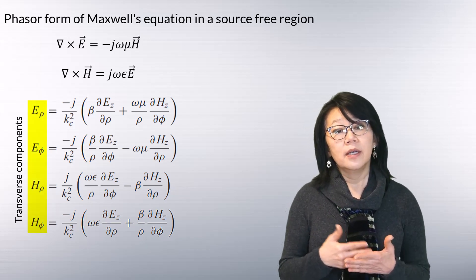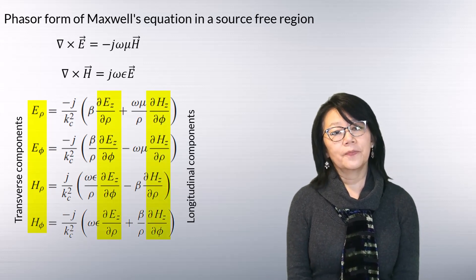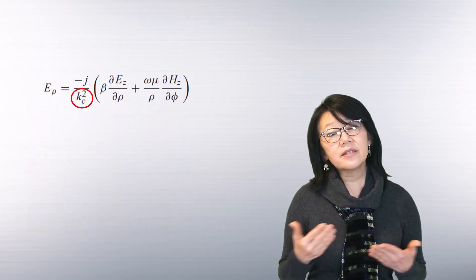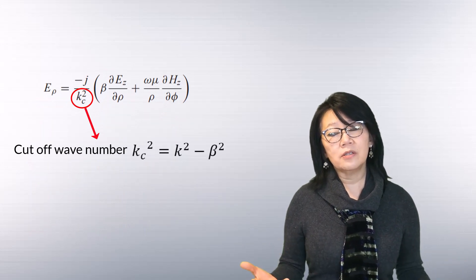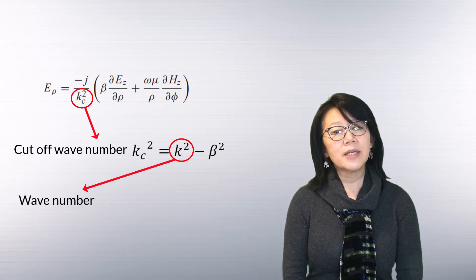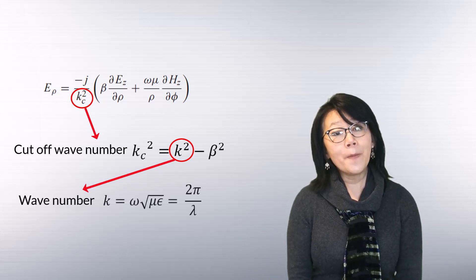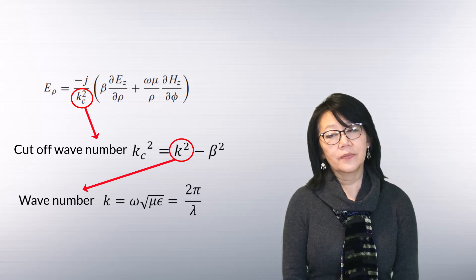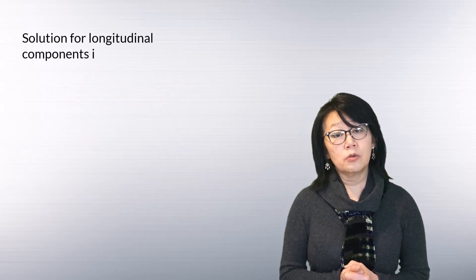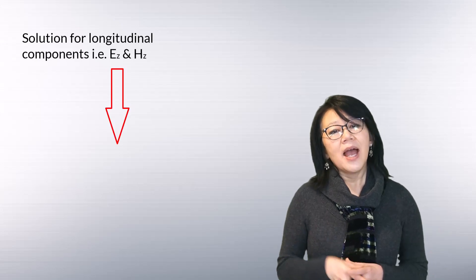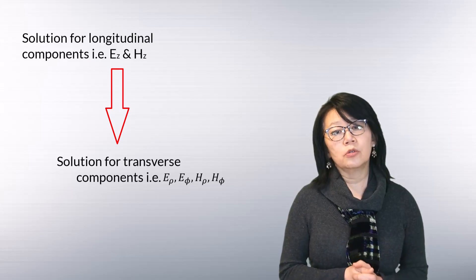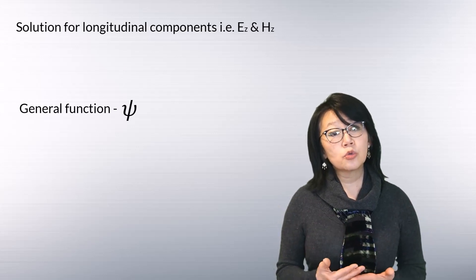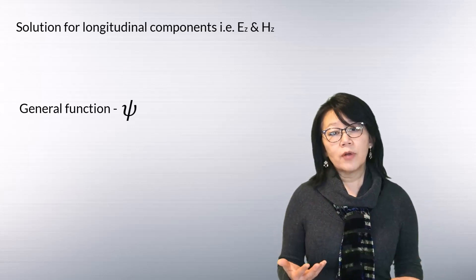Expanding Maxwell's equations in terms of individual components and expressing the transverse components in terms of the longitudinal components yields these results. Here, K_c is the cutoff wave number defined by this equation, and K is the wave number in the dielectric medium given by omega times the square root of mu times epsilon, or 2π divided by lambda. We then find the solution for the longitudinal components and derive the transverse components from them.